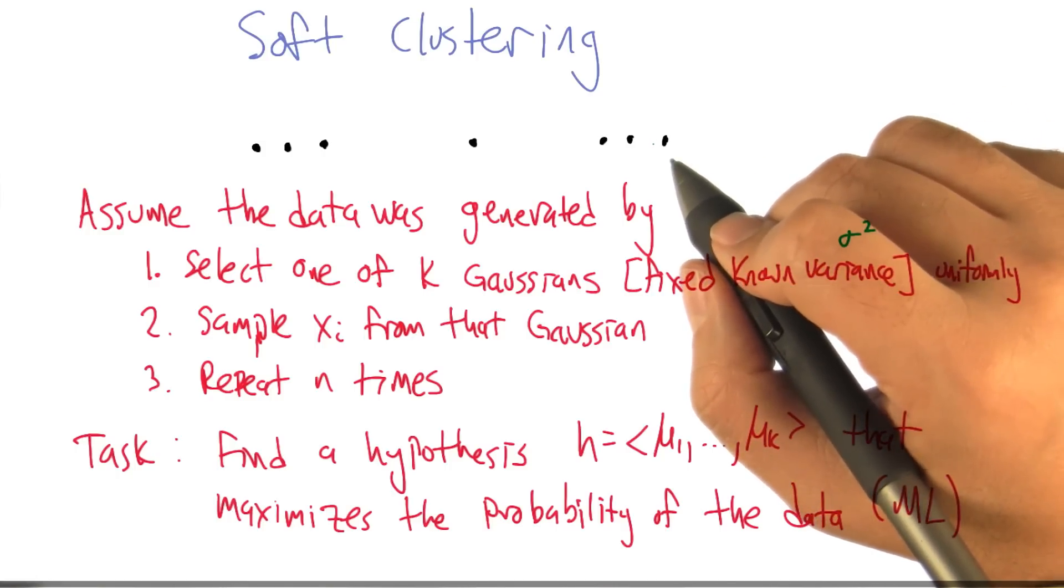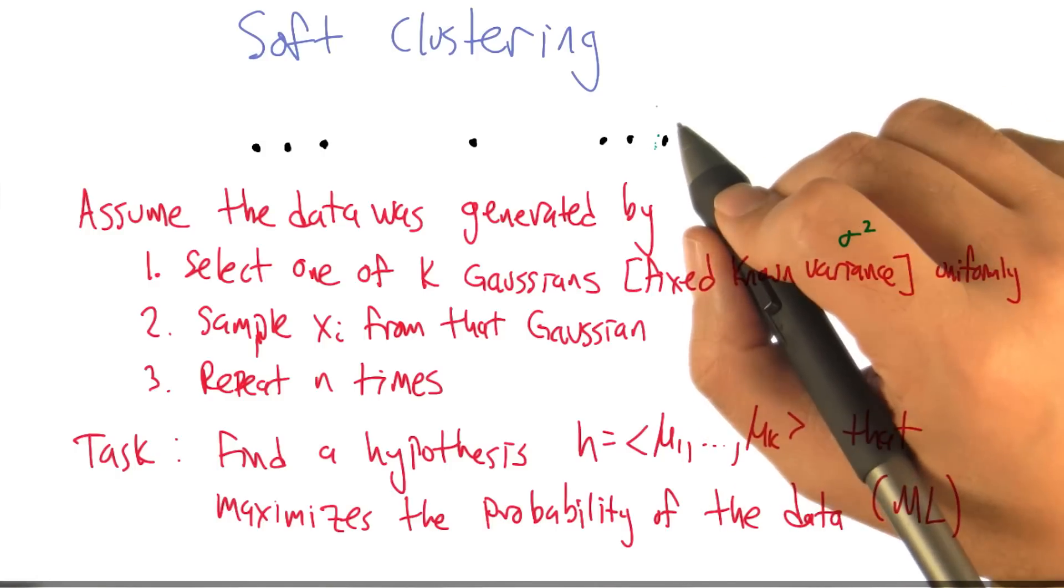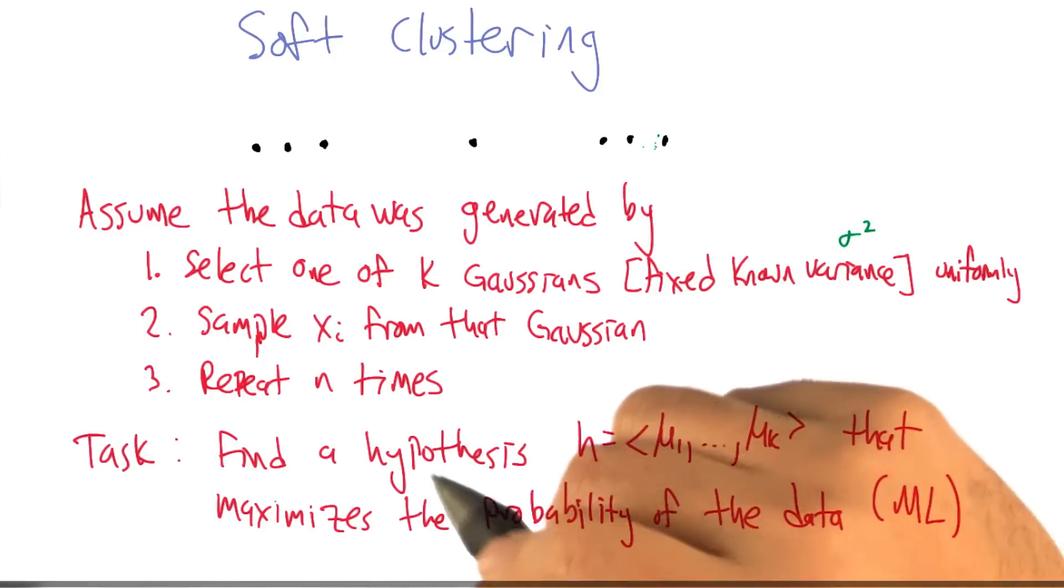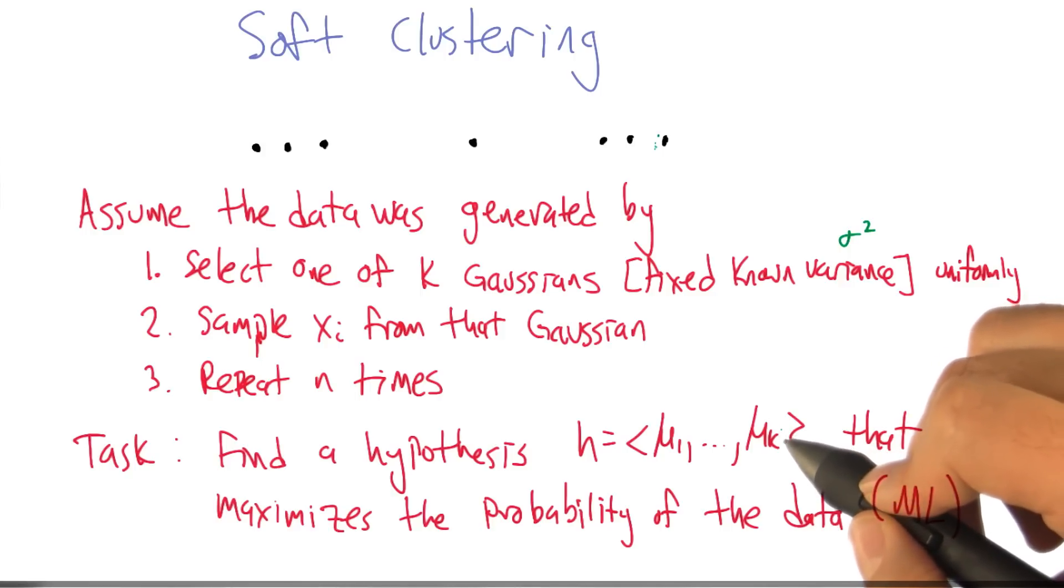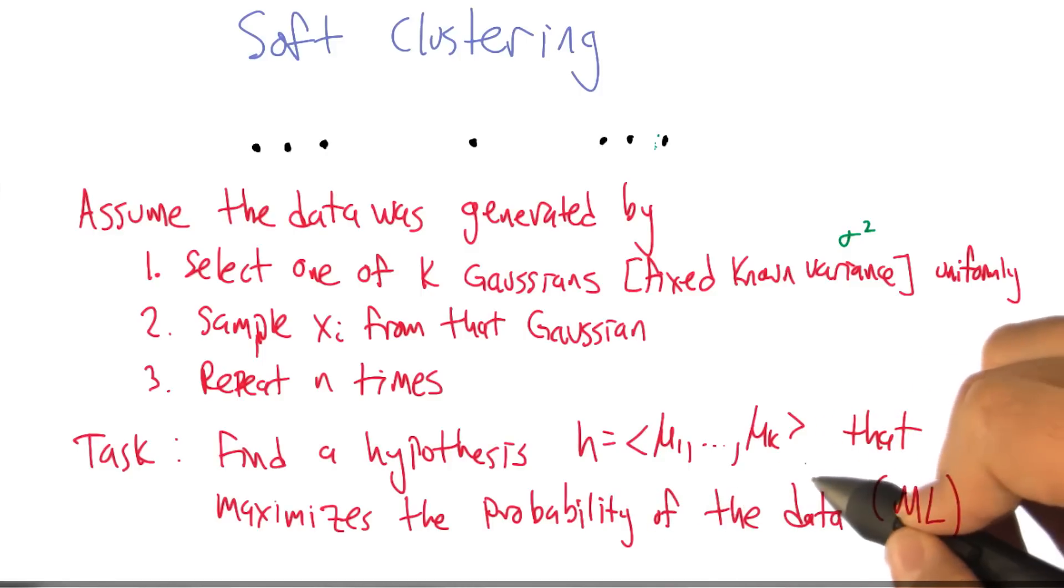So we're going to try to find a hypothesis, which in this case is just going to be a collection of k means. Not to be confused with k means. That maximizes the probability of the data, right?